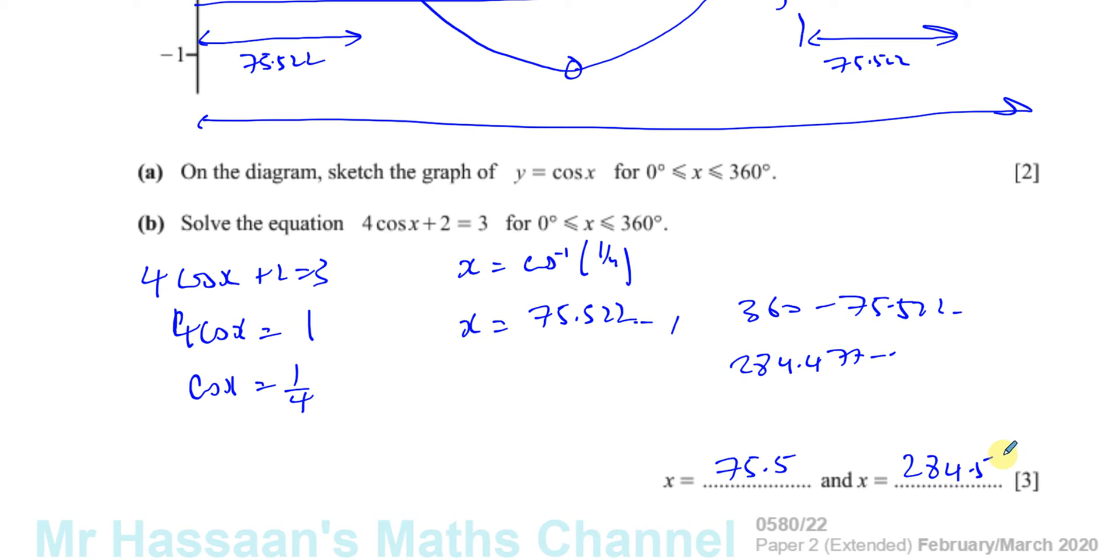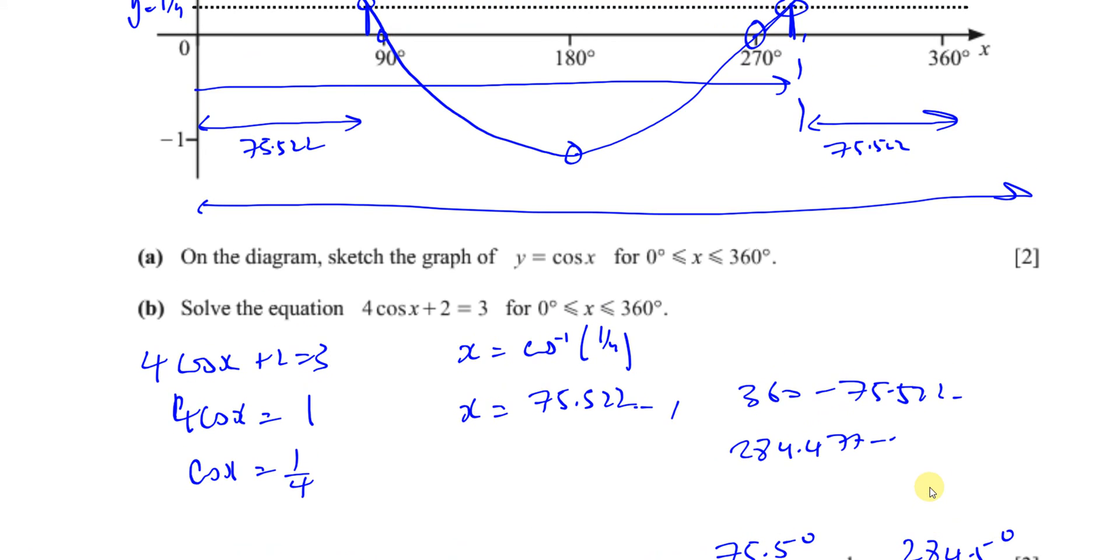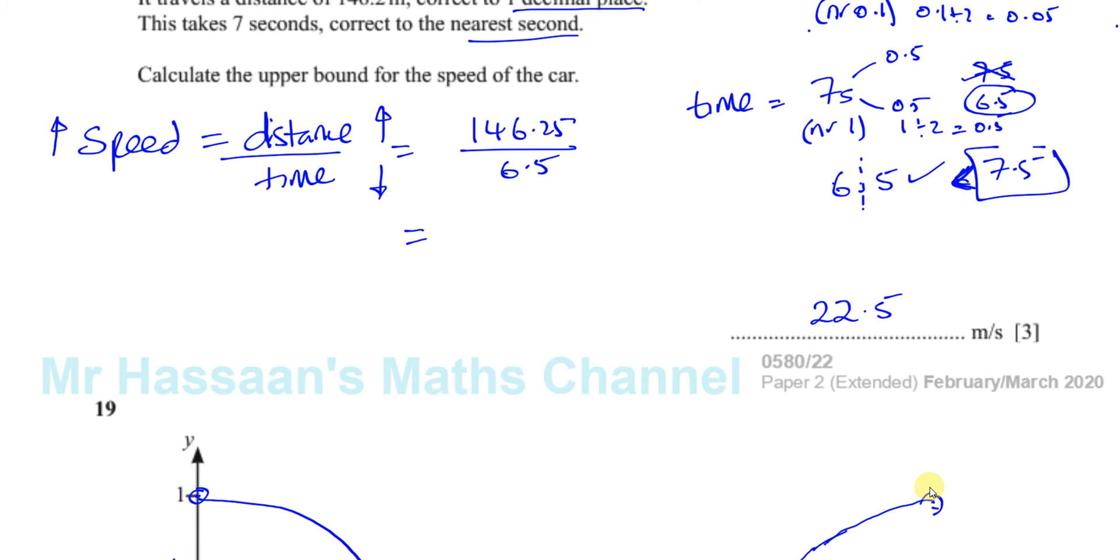That's rounded to the nearest degree, to one decimal place as angles should be. Okay, so that's 75.5° and 284.5°. Don't round 284.5° to the nearest unit or to the nearest three significant figures. It has to be to one decimal place.